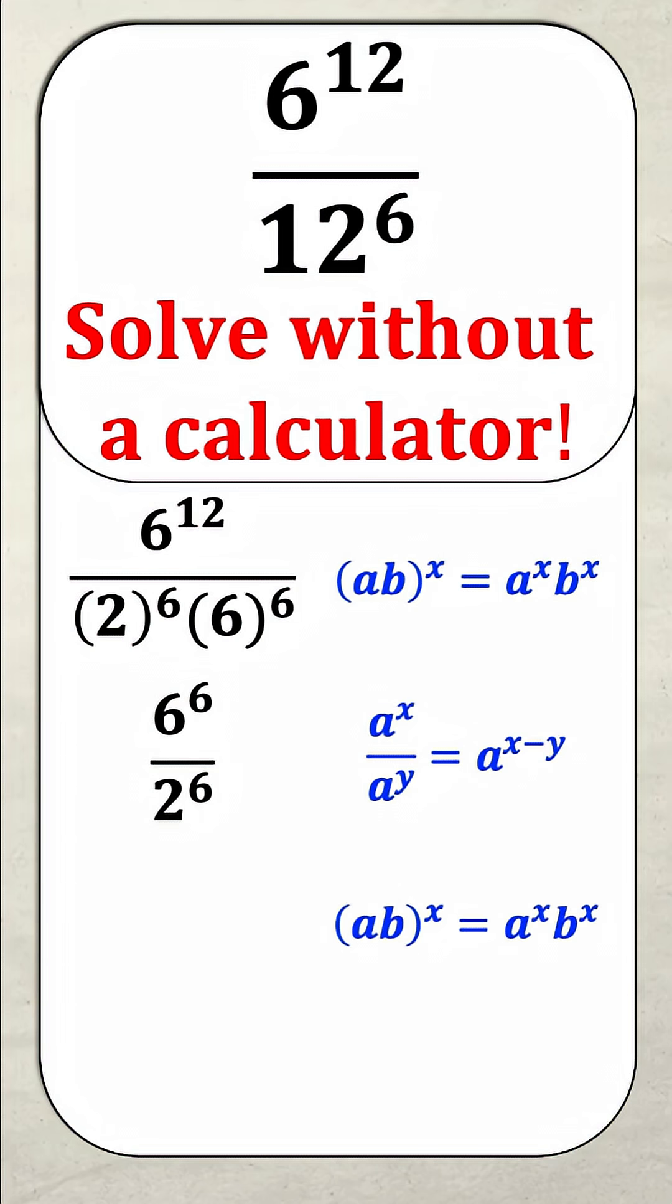Now I'm actually going to do the original distribution law again, except this time I'm going to do it to the 6. And as you can probably tell, I'm going to break it up into the factors 2 and 3, both individually raised to the power of 6. Now you'll notice there's a 2 to the power of 6 in the top and the bottom allowing me to cancel them out. And now all I have is 3 to the power of 6.